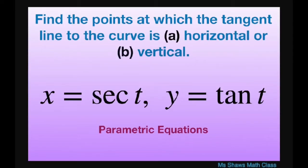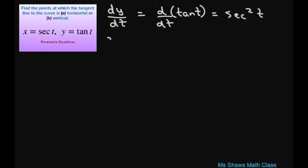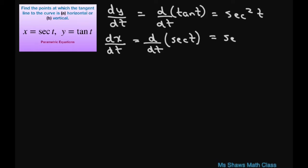Hi everyone. We're going to find the point at which the tangent line to the curve is horizontal or vertical for these two parametric equations: x equals secant of t and y equals tan of t. The first thing we want to do is take the derivative of y with respect to t, which equals the derivative of tan(t), giving us secant squared of t. We also take the derivative of x with respect to t, which equals the derivative of secant(t), giving us secant(t) times tan(t).